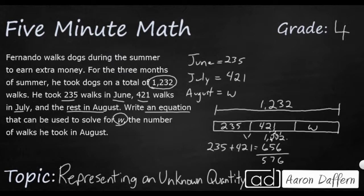So how can I solve this all in one equation? Well, another thought would be, what if I started with my total? 1,232. And if I took away my 235, and then I took away my 421, if I did two subtractions in a row, the only thing that would be left would be my W.